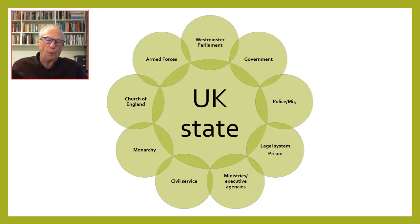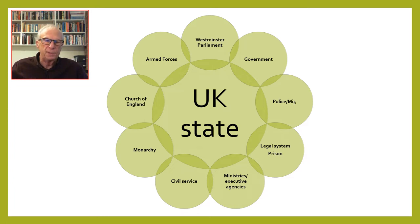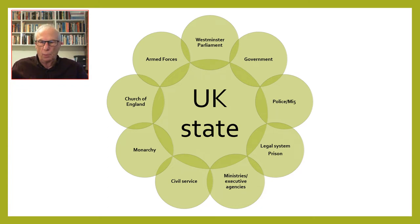As the UK's government system is formally a constitutional monarchy, the Crown is included among the institutions. Although the Crown has limited powers and performs a largely ceremonial role, it is an integral part of the present state system. The Church of England has been England's official state religion since the Reformation under Henry VIII in 1534. The Prime Minister appoints the Archbishop of Canterbury; bishops have reserved seats in the House of Lords; and together with the Crown, the Church of England plays a significant ideological role in society.